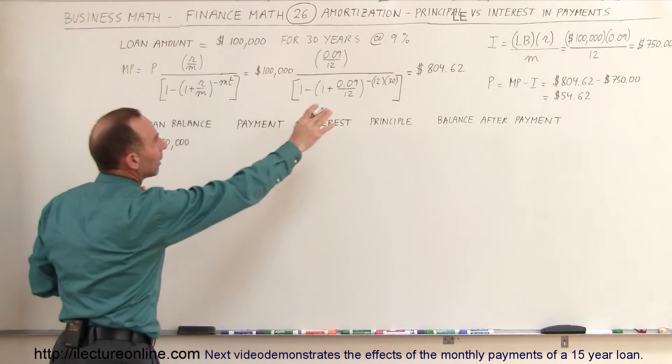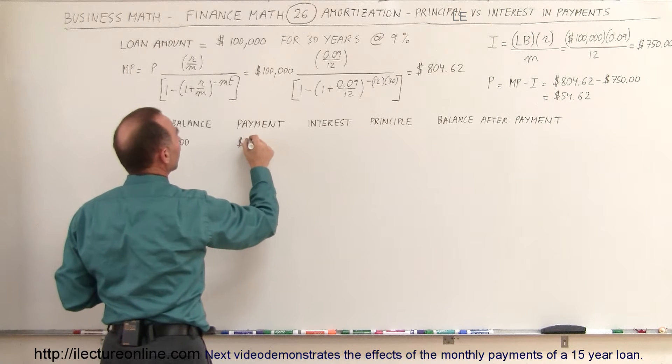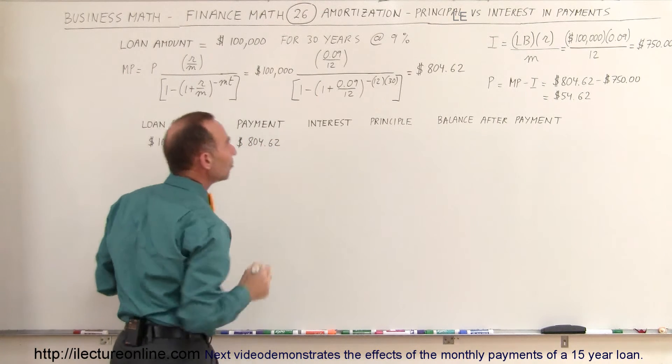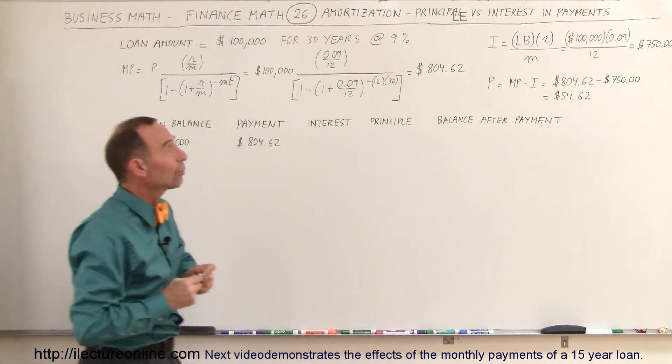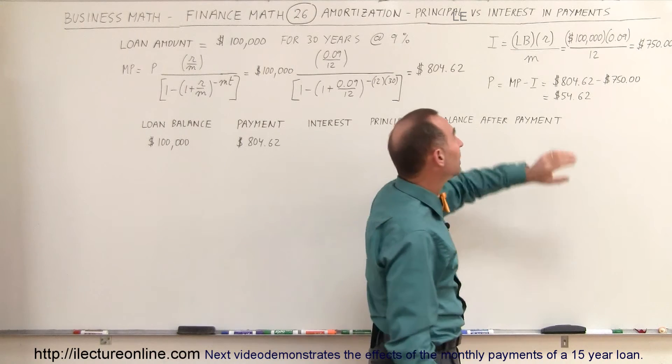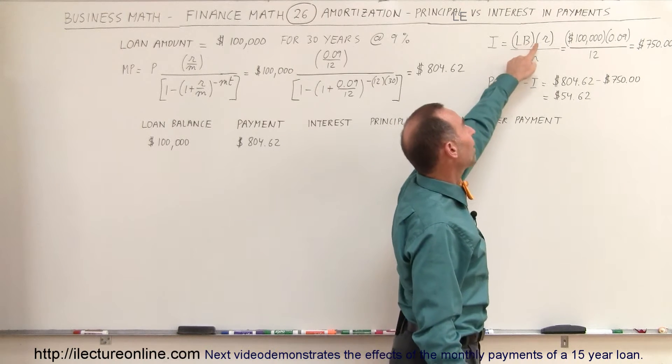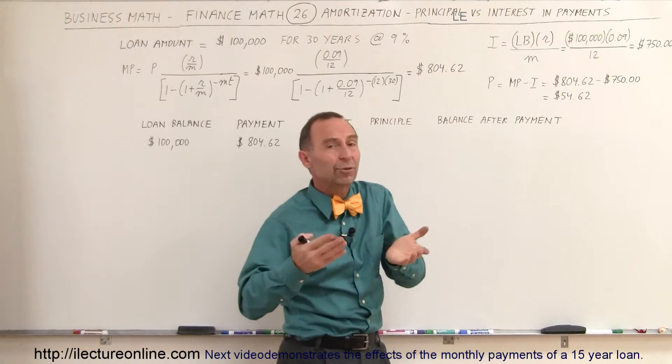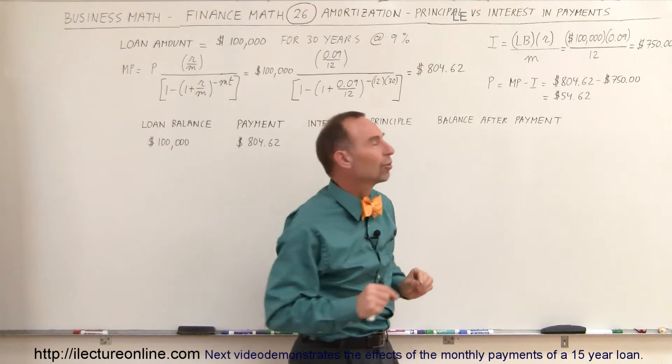The payment made every month will be $804.62. So how much of that will be interest? To calculate the interest, we have the equation right here. At any time for any payment you make, the interest will be the loan balance times the rate divided by 12. Because the rate is a yearly rate, and if we divide it by 12, we get the interest paid per month.